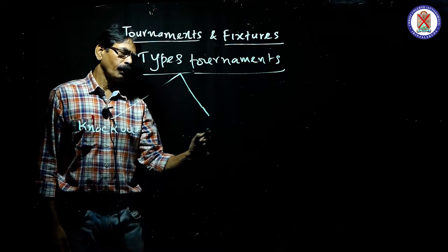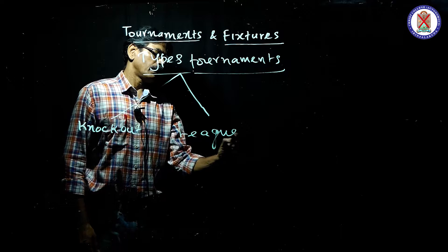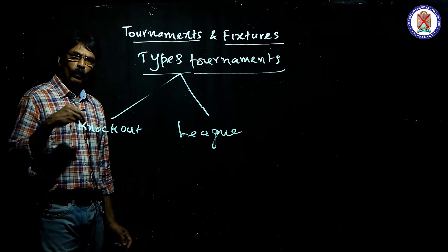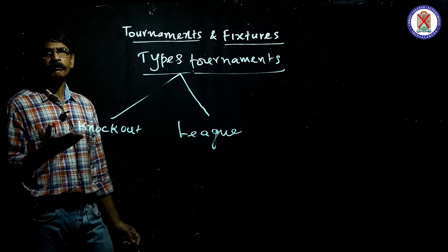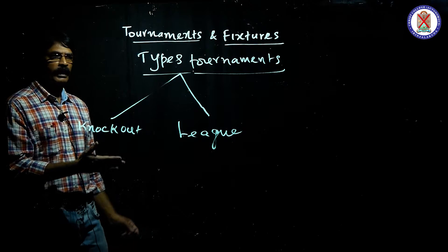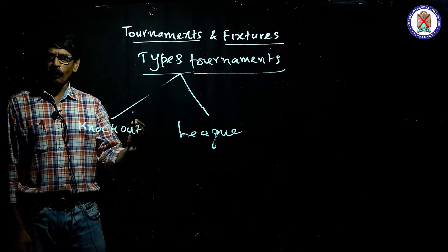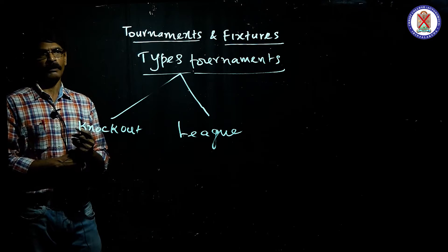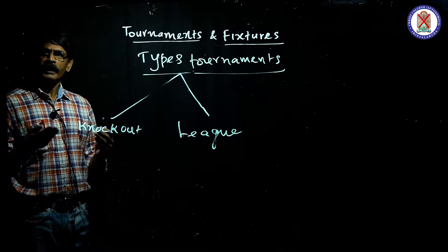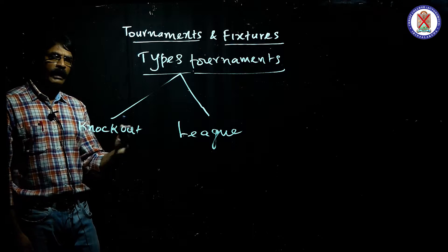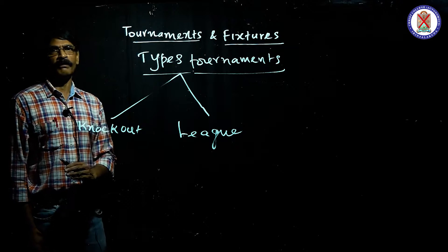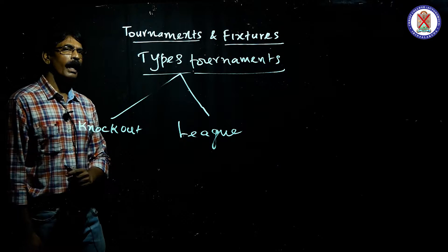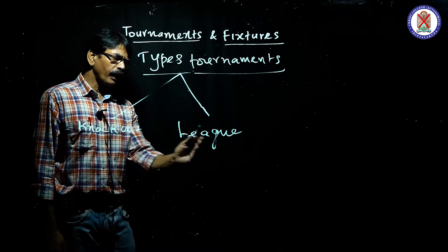The second type is league tournaments, also called round robin tournaments. Even if you lose, you can have another chance, because in league tournaments each team has to play against every other team once or twice depending upon the type. A team that loses need not go out; they continue to play until the completion of the league. That is the merit of league tournaments, whereas in knockout you are out immediately upon losing.